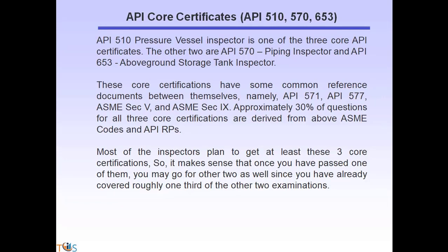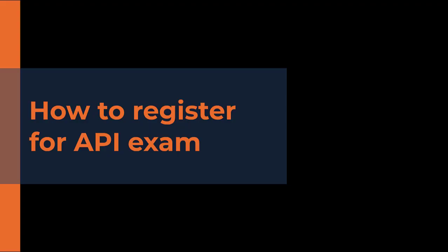ASME Section 5, ASME Section 9, API 571, and API 577 is common between all these three codes. Most inspectors plan to get at least three core certifications, so it makes sense that once you have passed one of them, you can go for the other two because you already covered 30% of the course material for the other two.